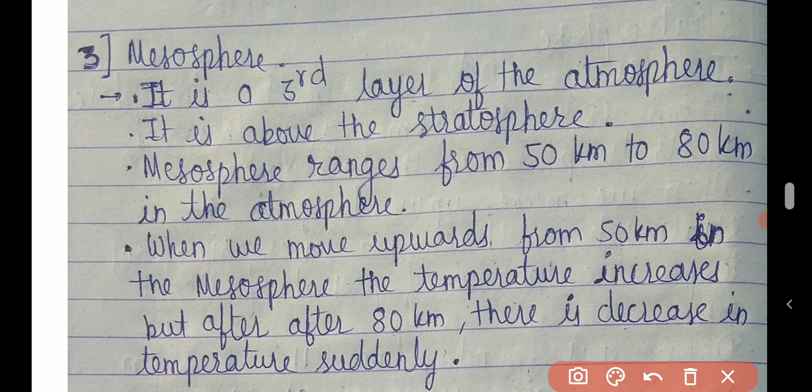Our third layer is mesosphere. First troposphere, then stratosphere, now mesosphere — it is the third layer of the atmosphere.